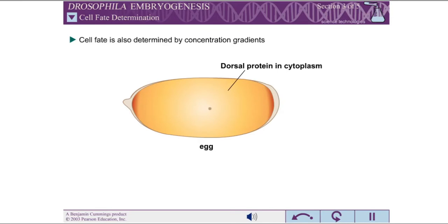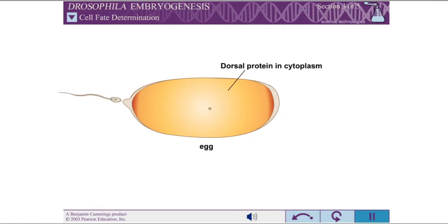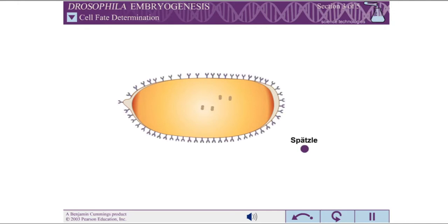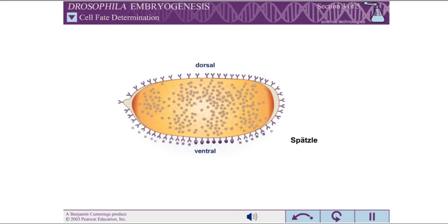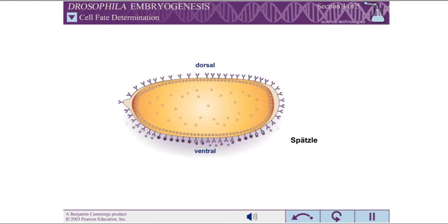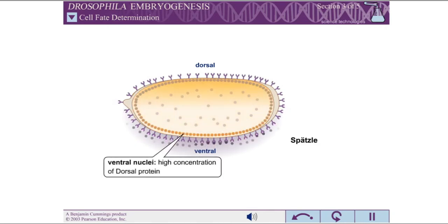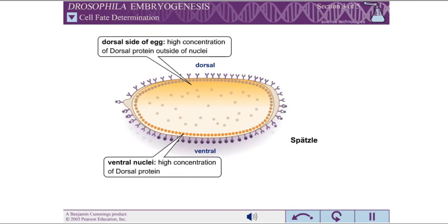Cell fate is also determined by concentration gradients. For example, the Dorsal protein is a regulatory protein initially distributed throughout the cytoplasm of the unfertilized egg. However, transport of the Dorsal protein into nuclei is controlled by a cell signaling molecule called Spaetzle. Spaetzle concentration is highest in the extracellular matrix on the ventral side of the egg cell. This concentration gradient leads to higher concentrations of Dorsal protein in ventral nuclei, with lower levels of Dorsal protein in nuclei located in lateral regions.